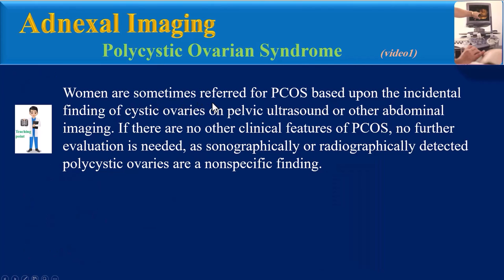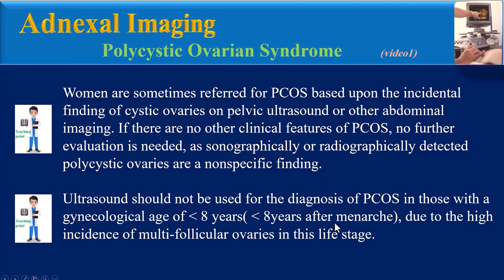Final teaching points: Women are sometimes referred for PCOS based on the incidental finding of cystic ovaries on pelvic ultrasound or other abdominal imaging. If there are no other clinical features of PCOS, no further evaluation is needed, as sonographically or radiographically detected polycystic ovaries are a non-specific finding. Ultrasound should not be used for PCOS diagnosis in those with a gynecological age of less than eight years, due to the high incidence of multi-follicular ovaries at this life stage.